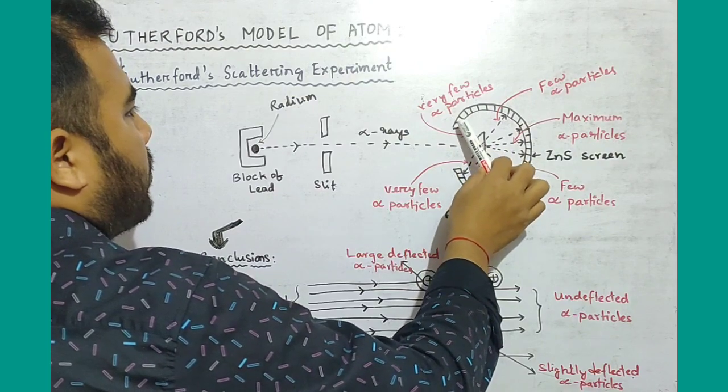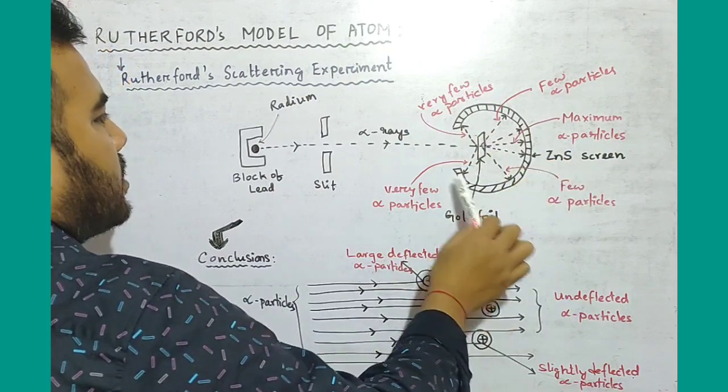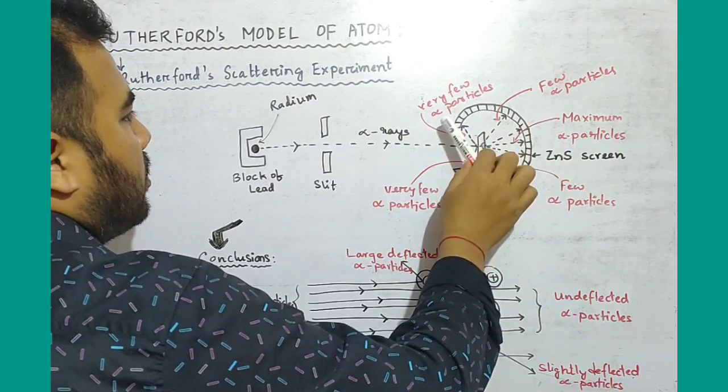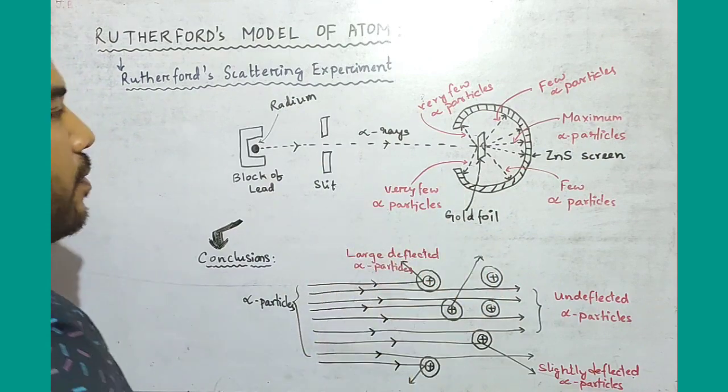The alpha particles strike the zinc sulphide screen and are detected as a flash of light.